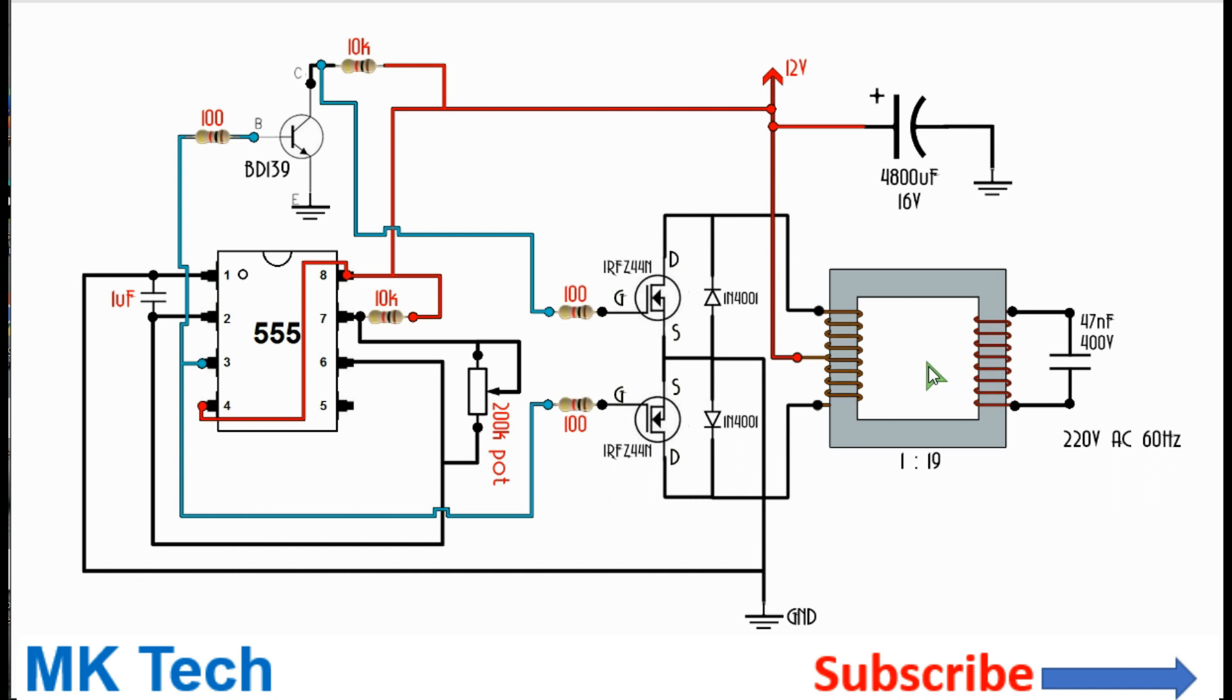So basically that's all about this inverter circuit and ensure that the transformer has a transformation ratio of about 1 is to 20 if you want 12 to 220 volts output or 1 is to 10 if you want a 12 to 120 volts output on your secondary.